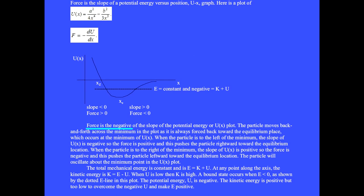Force is the negative of the slope of the potential energy or U(x) plot. The particle moves back and forth across the minimum in the plot as it is always forced back toward the equilibrium place which occurs at the minimum of U(x).